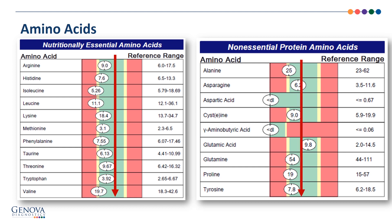The overall pattern is of low essential amino acids from the diet. On the right, the non-essentials that come from the essential amino acids are also trending low. So it's not an issue — at least demonstrated here — of the essential amino acids having a problem converting to the non-essential. Their patterns are very similar.